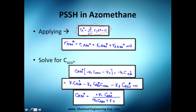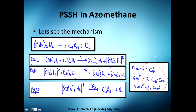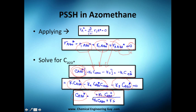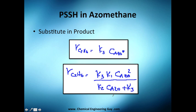Applying PSSH, the sum of all rates of reaction for the intermediate equals zero. Adding R1, R2, and R3 together and since the negative terms cancel, we can factor out the concentration of excited azomethane (ASO*). Setting that equal to zero and solving for [ASO*], we get an expression for the concentration of the excited intermediate in terms of the concentration of normal azomethane.